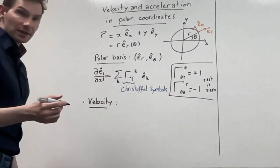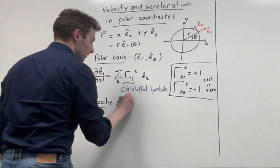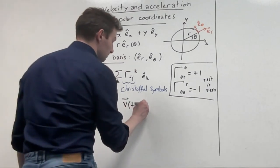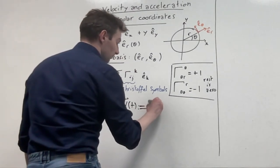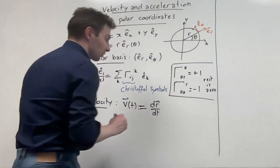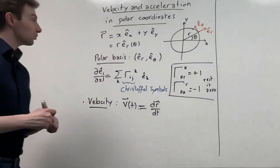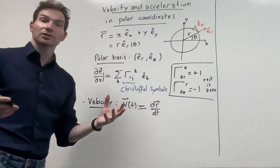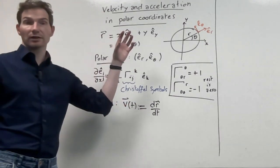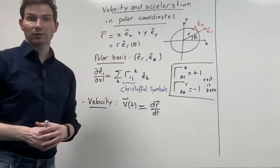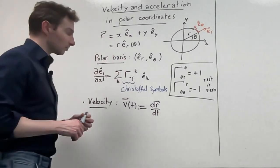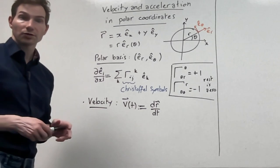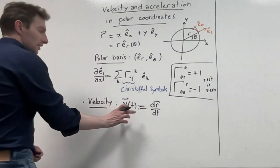The velocity vector V(t) is by definition the time derivative of the position vector. What that means is that x and y are functions of time — it's a parametric system where x and y depend on time, which you might plot as a parametric function on a computer.